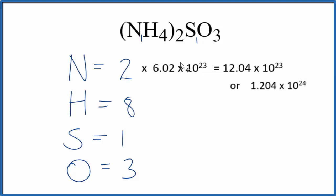Likewise, you could multiply 8 times Avogadro's number to figure out the number of hydrogens. 1 times Avogadro's number for the sulfur. And then the oxygen, you would multiply 3 times Avogadro's number. That would give you the number of oxygen atoms in NH42SO3.